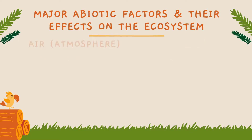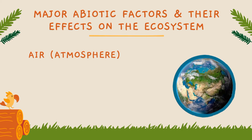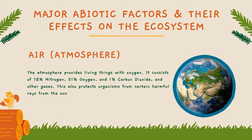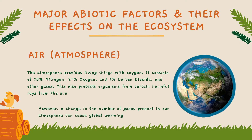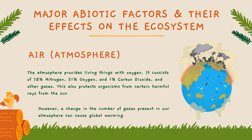Next, we have air or the atmosphere. The atmosphere provides living things with oxygen. It consists of 78% nitrogen, 21% oxygen, 1% carbon dioxide, and other gases. This also protects organisms from certain harmful rays from the sun. However, a change in the number of gases present in our atmosphere can cause global warming.